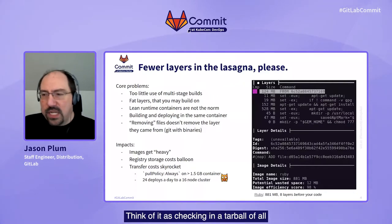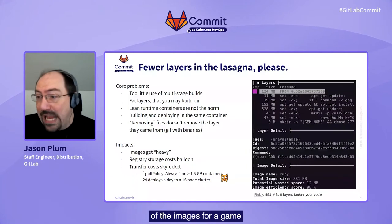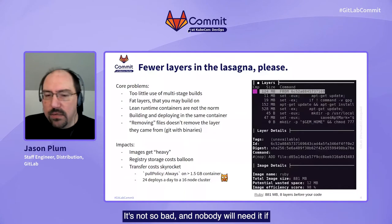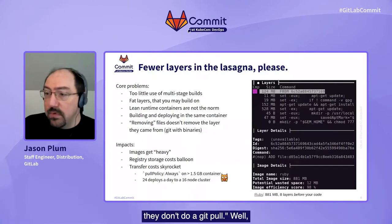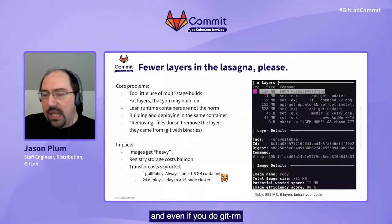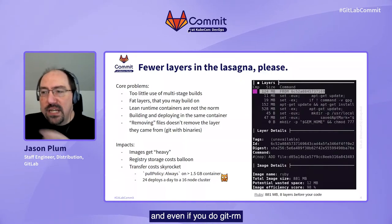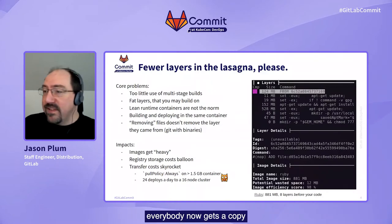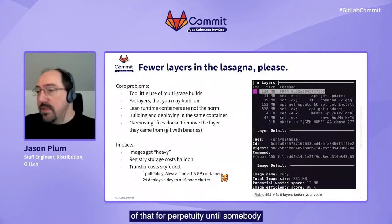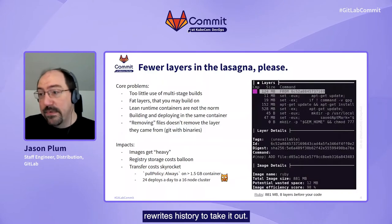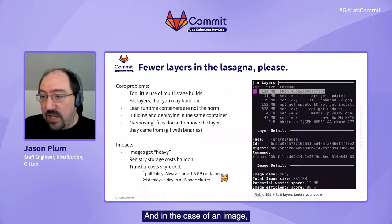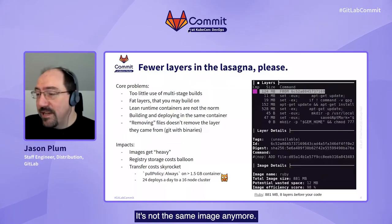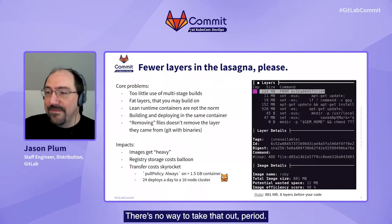Think of it as checking in a tarball of all of the images for a game into a Git repository. You think it's compressed, it's not so bad, and nobody will need it if they don't do a Git pull. Well, now it's in the object store. And even if you do git rm, the moment that you've pushed it anywhere else, everybody now gets a copy of that for perpetuity until somebody rewrites history to take it out. And in the case of an image, when you rewrite history to take it out, you're rebuilding the image. It's not the same image anymore. There's no way to take that out.